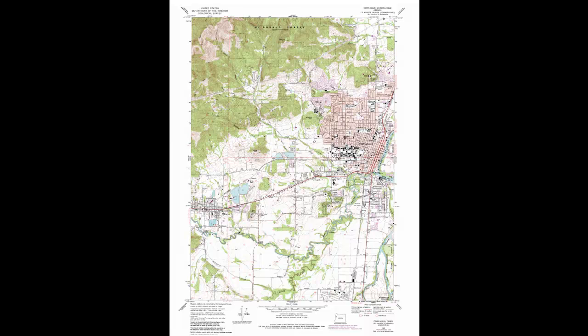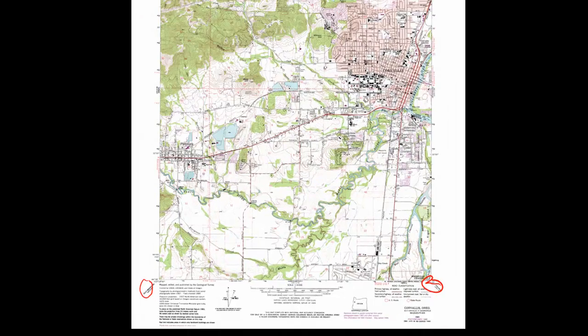Okay class, this is the 7.5 minute quadrangle that covers the Corvallis area. Remembering that a 7.5 minute quadrangle covers a lot less than a degree, we see that latitude and longitude are marked at each corner of the map in full. Corvallis is of course north latitude and west longitude.